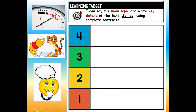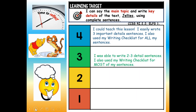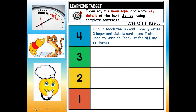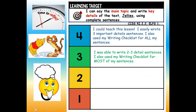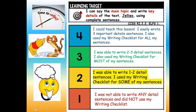At the top of your paper, reflect on how well you hit the target today. Our learning target was: I can say the main topic and write key details of the text Jellies using complete sentences. Would you give yourself a four — I could teach this lesson, I easily wrote three important detail sentences and used my writing checklist for all sentences? A three — I wrote two to three detail sentences and used the checklist for most? A two — I wrote one to two detail sentences and used the checklist for some? Or a one — I was not able to write any detail sentences and did not use the checklist?